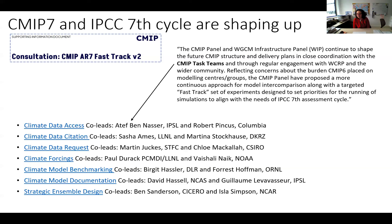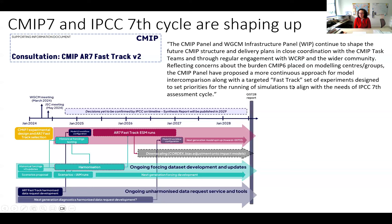CMIP reflected on the burden of the CMIP6 exercise, and the panel proposed a more continuous approach for model intercomparison, along with a targeted fast-track — a keyword — set of experiments designed to set priorities for running simulations to align with IPCC AR7's assessment cycle. The fast track is designed as a lighter set of experiments compared to CMIP6, but it doesn't prevent us from doing interesting experiments in PMIP.